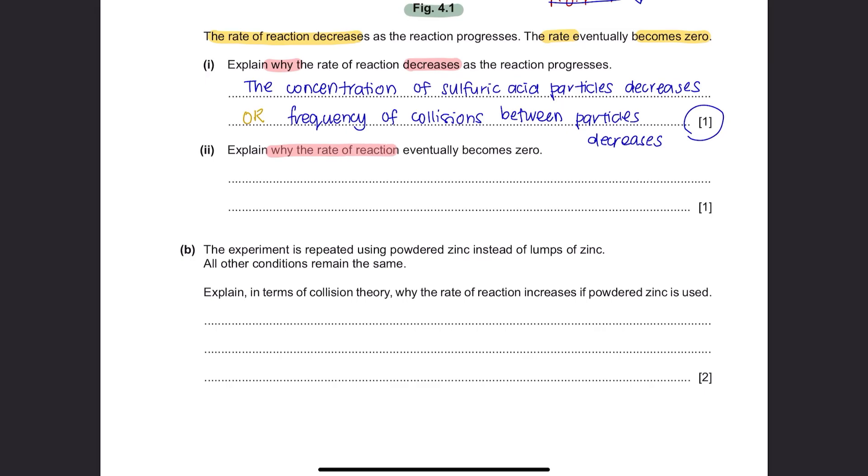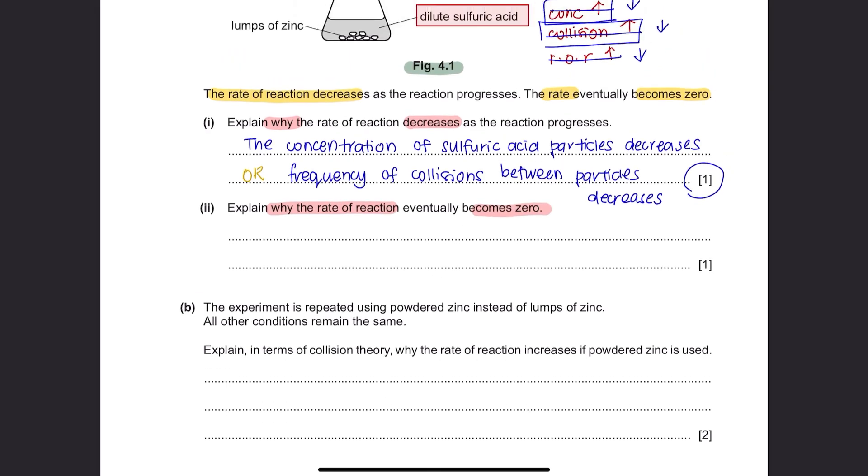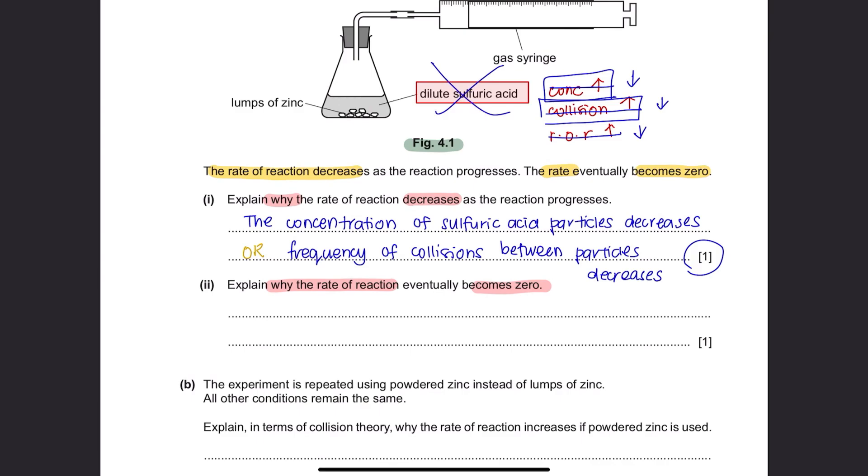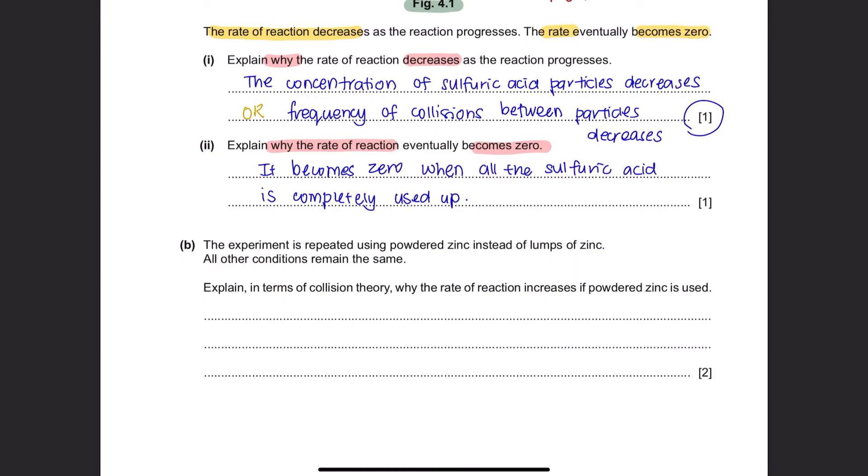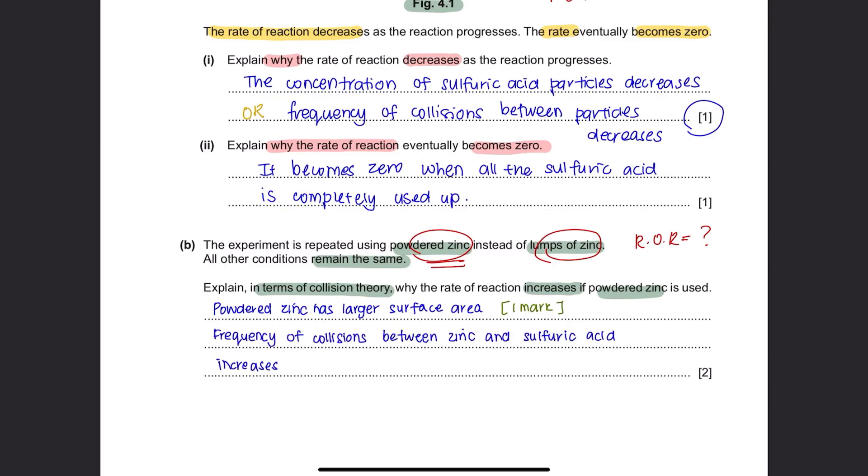Part 2. Explain why the rate of reaction eventually becomes zero. This reaction will completely become zero when all the sulfuric acid is completely used up. Question B. The experiment is repeated using powdered zinc instead of lumps of zinc. All other conditions remain the same. Explain, in terms of collision theory, why the rate of reaction increases if powdered zinc is used. Firstly, state what effect does using powdered zinc instead of lumps have on the rate of reaction. Powdered zinc has larger surface area compared to lump zinc, giving you the first mark. So, this means that the frequency of collisions between zinc and sulfuric acid increases. This will give you your second mark.